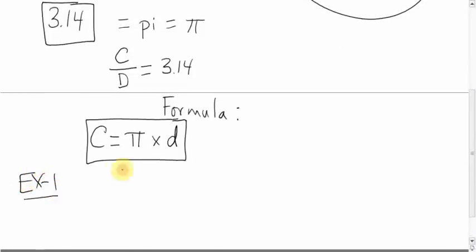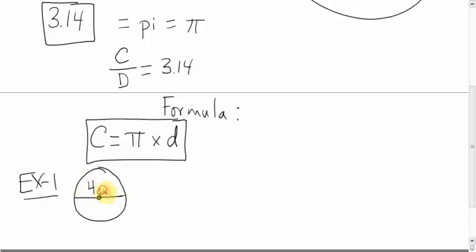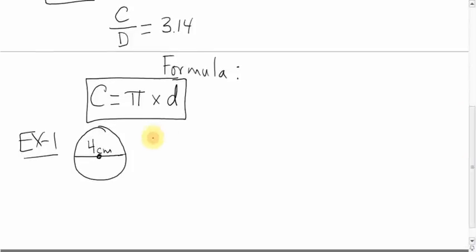Let's take a look at an example. We have a circle, and the line and dot across the middle indicates the distance to the center of the circle. Let's say that distance is 4 centimeters, and we're asked to find the circumference. Just like we do with Pythagoras questions, I'd like you to set it up: formula, work, answer.